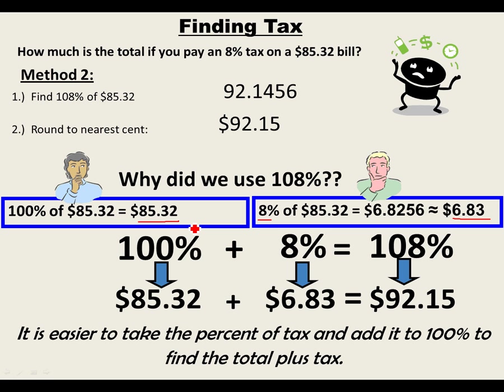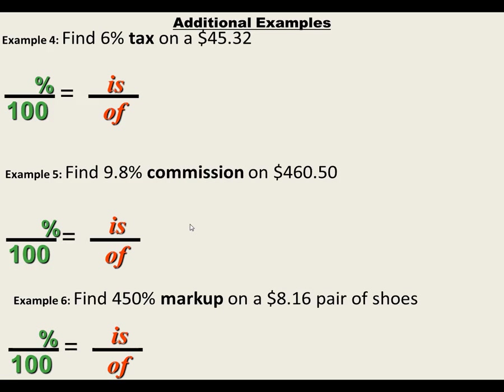So for tax, whatever the tax rate is, just add it onto 100%. If it's a 9% tax, think of it as 109%. If it's 15% tax, think of it as 115%. If it's 4.5%, think of it as 104.5%. Find that percent of the number and you're done. Go ahead and find these practice problems any way you want.